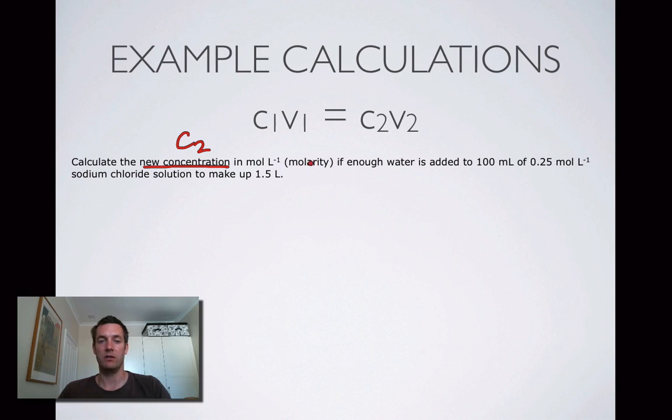If enough water is added—we're adding water, we're diluting something—that's a good sign that you've got a dilution problem and you're going to need to use this formula. 100 mL is our original volume, and 0.25 is our original concentration. We're taking the solution and making it up to 1.5 liters, so here's our new volume V2. We're being asked to find C2.